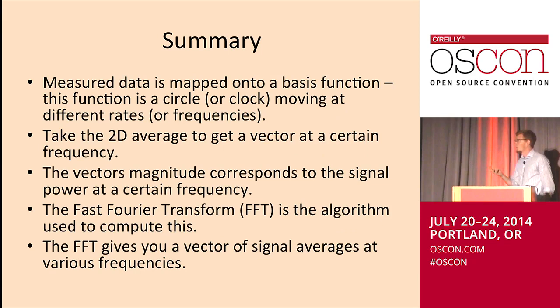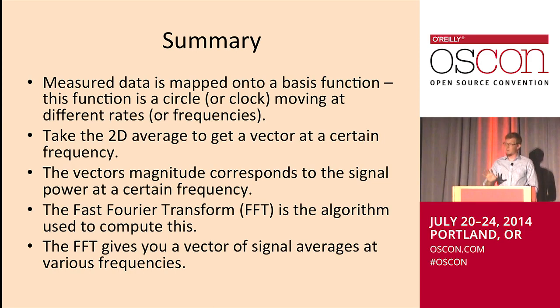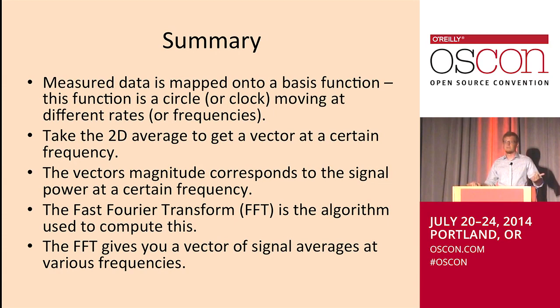In summary: take measured data, map it onto a basis function — a circle, a point rotating at different frequencies — take the two-dimensional average of all those points mapped onto that function, find the magnitude of the vector, and save that. The FFT algorithm is an efficient algorithm used to compute all those values, giving you a vector of signal averages at various frequencies.